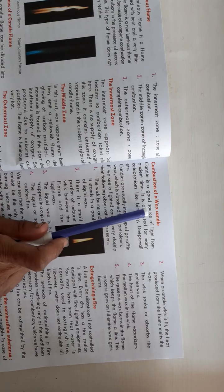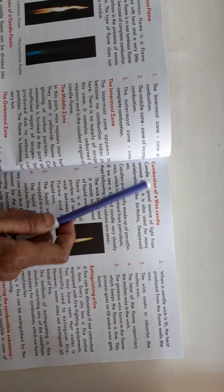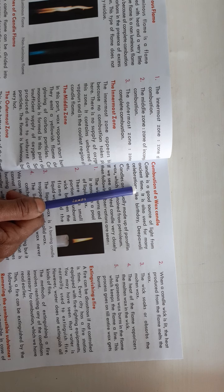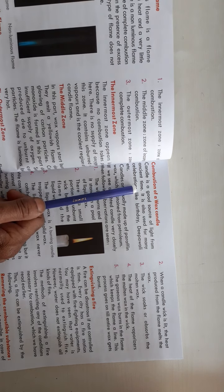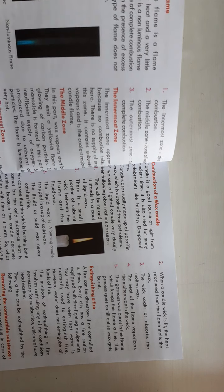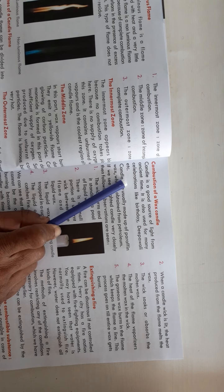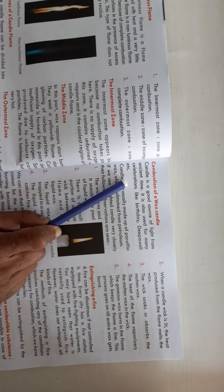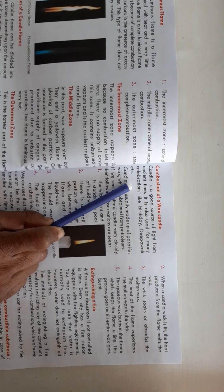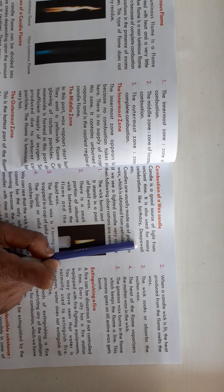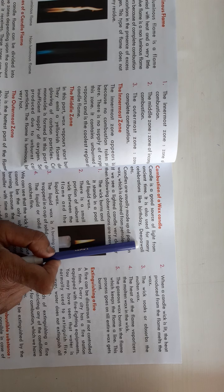Next is combustion of a wax candle. Candle is a good source of light from ancient times — पहले के समय में जब light नहीं होती थी तो candle जलाकर रोशनी करते थे. It is also used for many celebrations — आज के समय में जब हम कुछ celebrate करते हैं, candle का use करते हैं. जैसे Diwali पर, या birthday, party, anniversary में हम candle का use करते हैं.